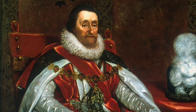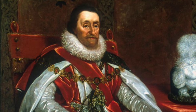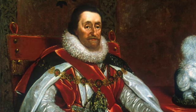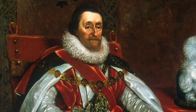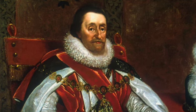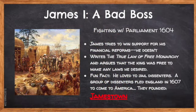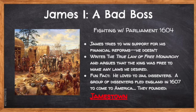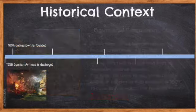Now we're going to jump across the English Channel and take a look at the reign of James I. James I really wasn't that great of a leader. He was the first Stuart King of England, and he tried to exert the power of the crown over Parliament. Remember the Magna Carta says that no one, not even the king, is above the law. Well, James I writes his book, The True Law of a Free Monarchy, and he argues with Parliament over everything.